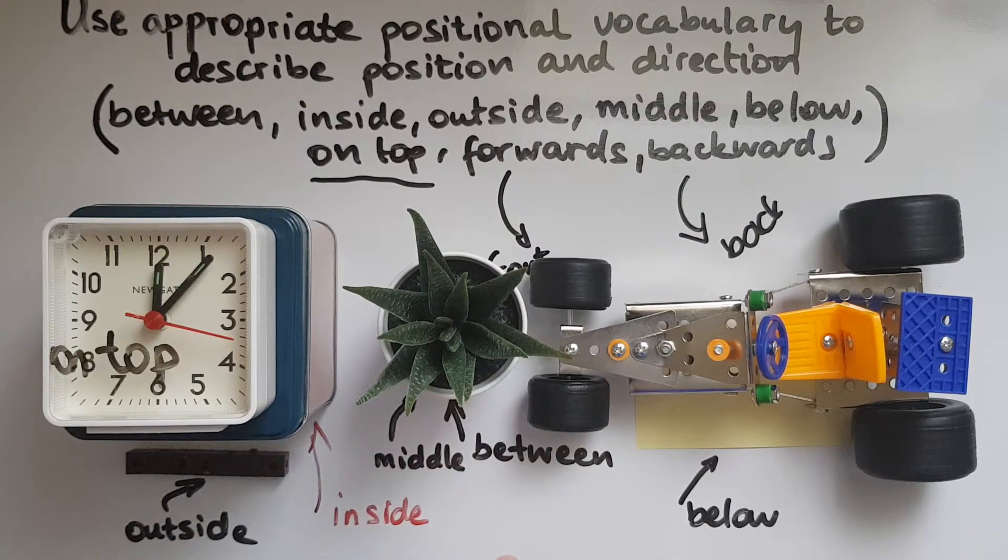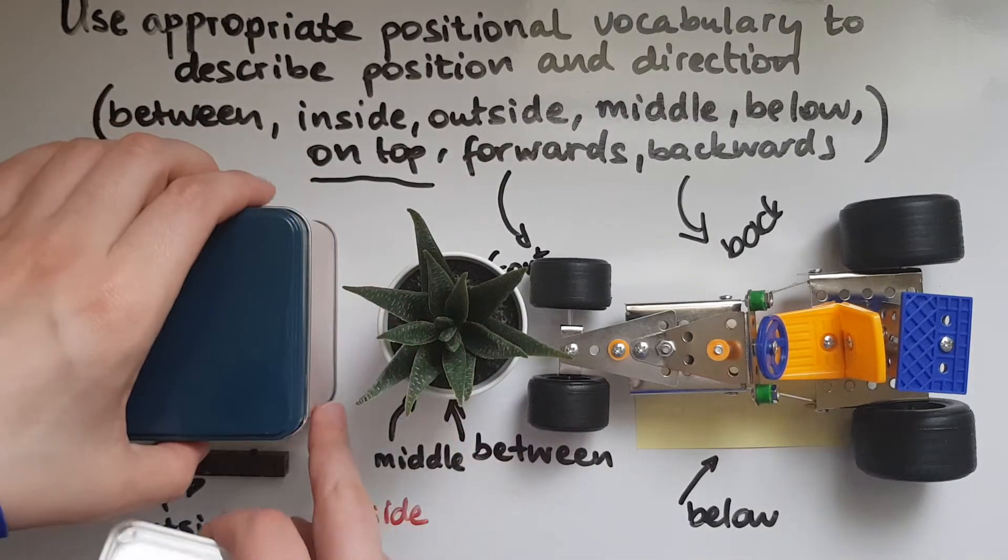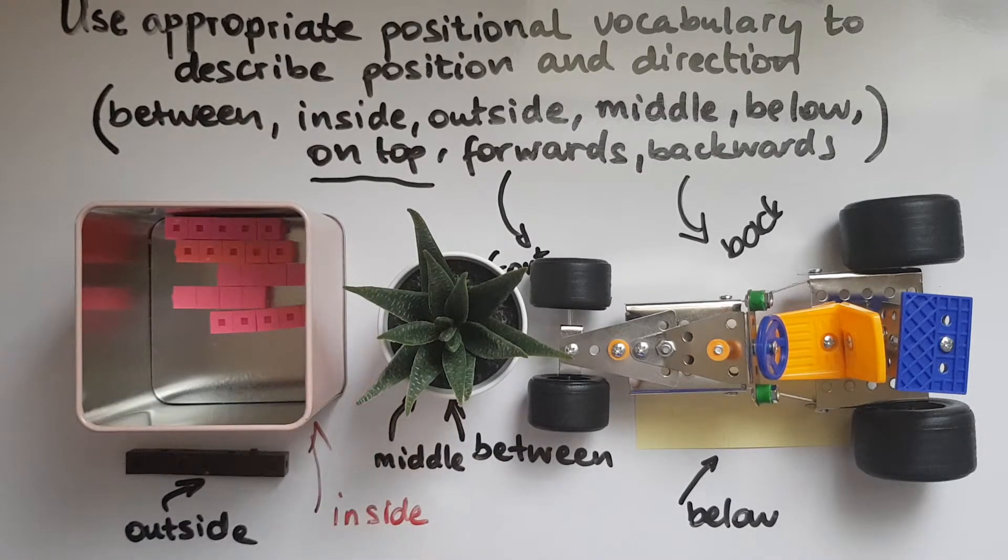And we looked at inside. So inside there was some pink cubes. And outside some brown cubes. Outside of the box. Inside the box there are pink cubes. Outside of the box there are brown cubes.